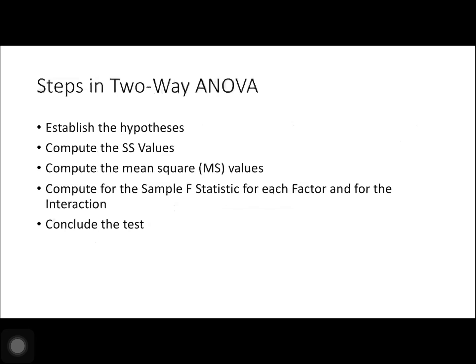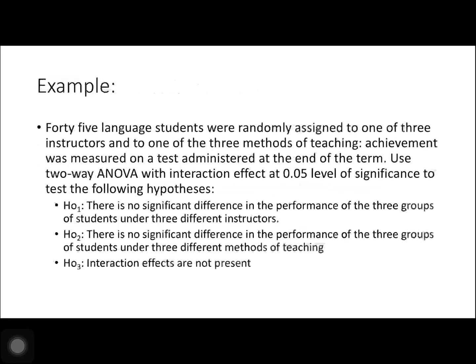For the steps in two-way ANOVA, we need to: establish our hypothesis, compute the sum of squares values, compute the mean squares values, compute the sample F statistic for each factor and for the interaction, and then conclude the test.